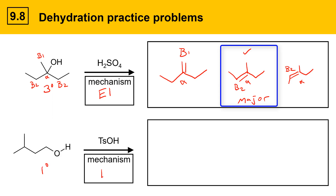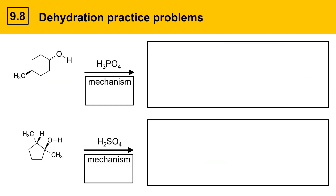The lower example is a primary alcohol, so the mechanism goes by E2. The OH group gets protonated by the acid, but it can't leave directly — a base must come by and deprotonate simultaneously. When it does, it gives an alkene product between the alpha and beta positions.